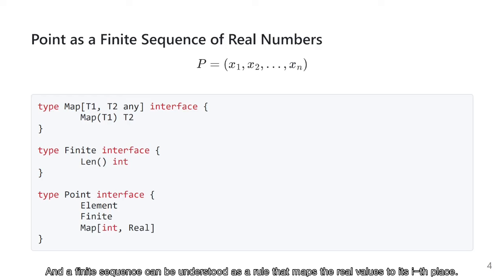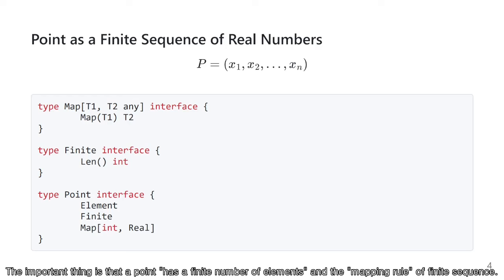A finite sequence can be understood as a rule that maps the real numbers to its i-th place. The important thing is that a point has a finite number of elements and the mapping rule of a finite sequence. Therefore, a point can be defined as an interface type that encapsulates the finite interface and the map interface.